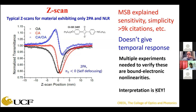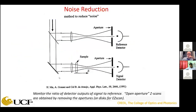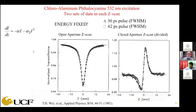If you really want to make sure you have good signal-to-noise, it's always important to use a reference beam configured the same way as your sample beam, and reference your signal detector to your reference detector. That really cleans up the noise in the z-scan experiment.